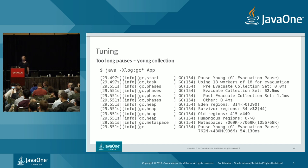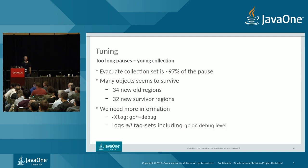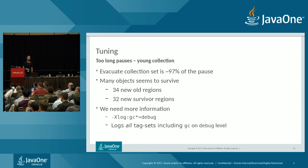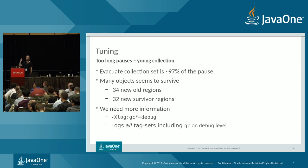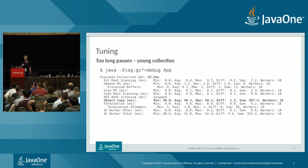Looking more closely, the evacuate collection set phase took almost all the time — 52.5 milliseconds out of 54ms total. There's also quite a large increase in old regions, and a significant number of survivor regions in use. Evacuating the collection set took approximately 70-90% of the pause, and many objects survived — we needed 34 new old regions and 32 new survivor regions.